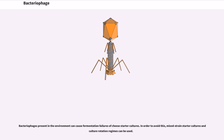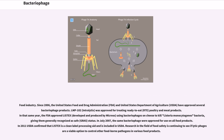In the food industry, since 2006, the United States FDA and USDA have approved several bacteriophage products. LMP-102 (Intralytix) was approved for treating ready-to-eat poultry and meat products. In that same year, the FDA approved Listex, developed and produced by Micreos, using bacteriophages on cheese to kill Listeria monocytogenes bacteria, giving it generally recognized as safe (GRAS) status. In July 2007, the same bacteriophages were approved for use on all food products.